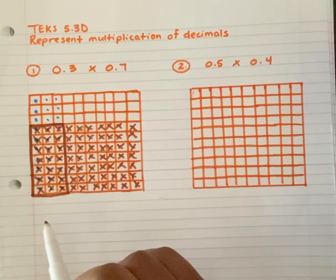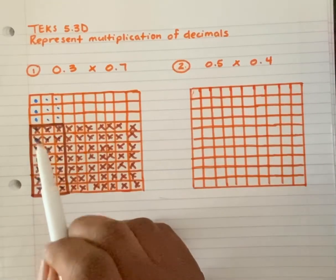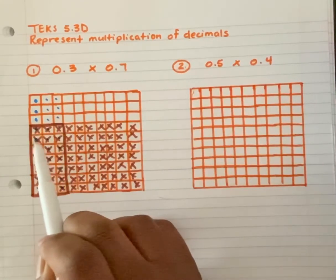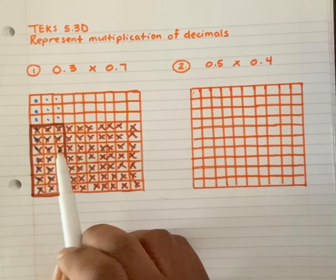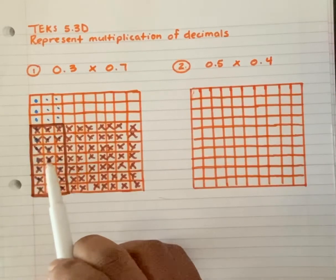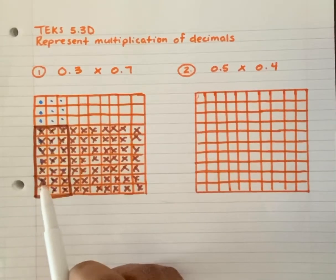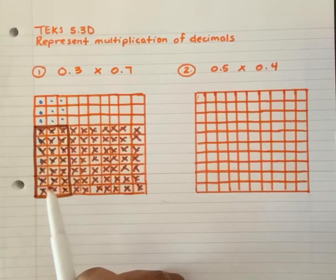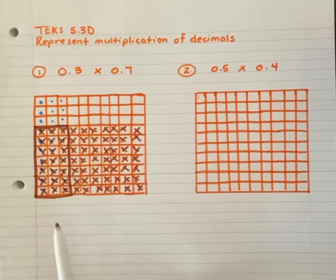So now I'm going to count — these are units. 1, 2, 3, 4, 5, 6, 7, 8, 9, 10, 11, 12, 13, 14, 15, 16, 17, 18, 19, 20, 21. This is 21 hundredths.